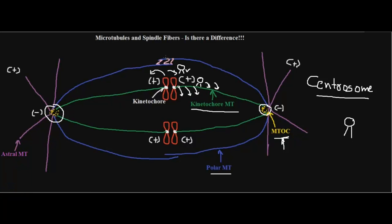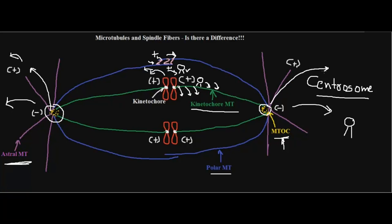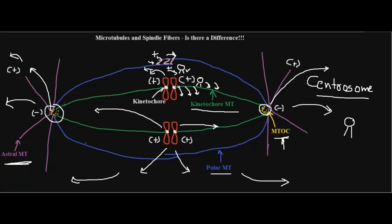For polar microtubules, motor proteins cross-link the two overlapping polar microtubules at the equator. These motor proteins walk toward the plus end, pushing the two polar microtubules away from each other, which in turn pushes the centrosomes toward the poles — ensuring chromosomes are pulled far enough apart. The astral microtubule grows toward the cortex region of the cell, pulling the centrosome toward the cell edge, further ensuring chromosomes are pulled sufficiently apart.